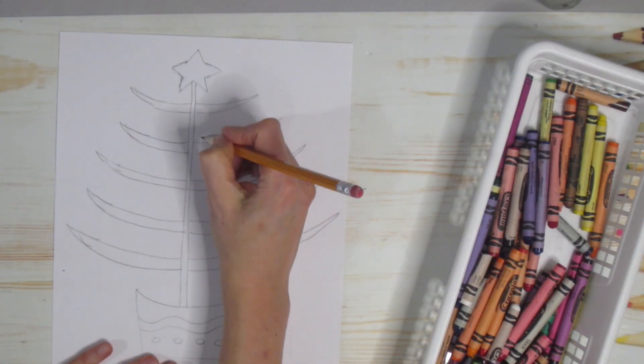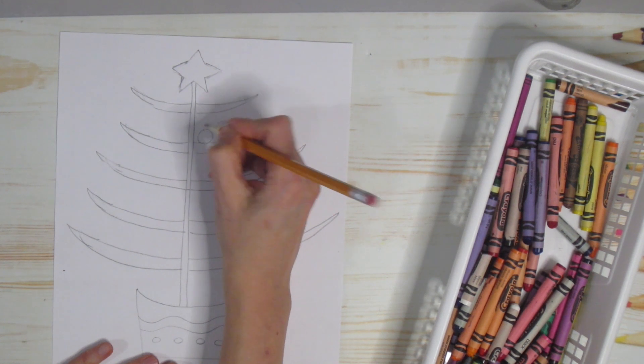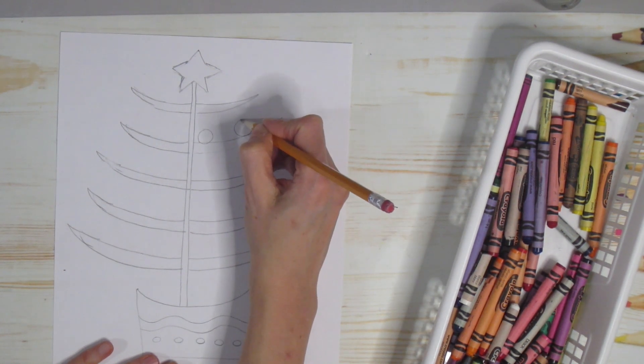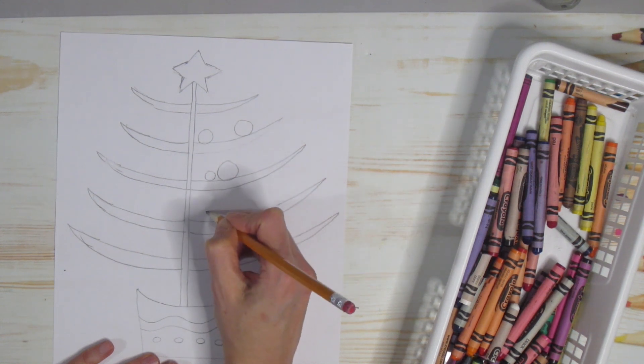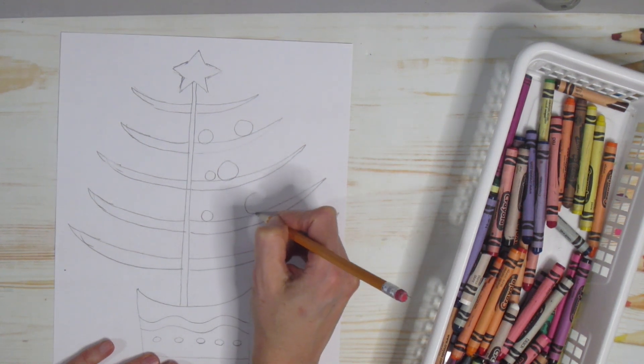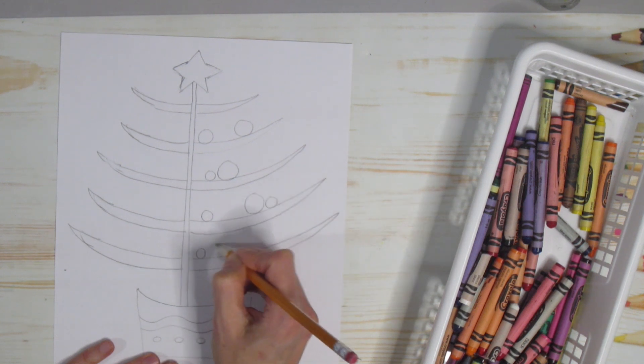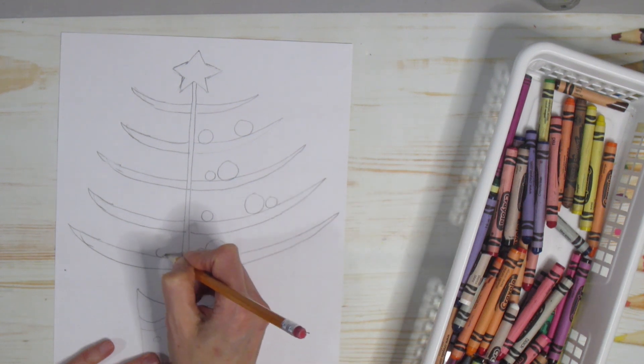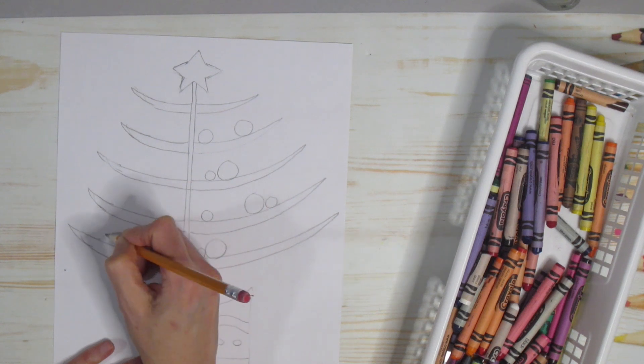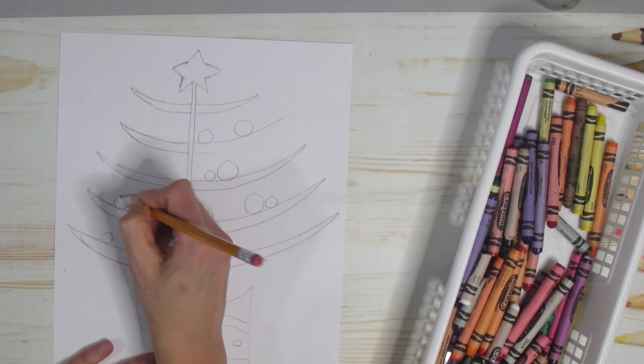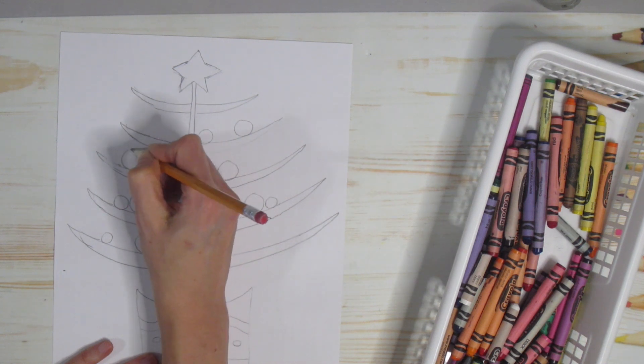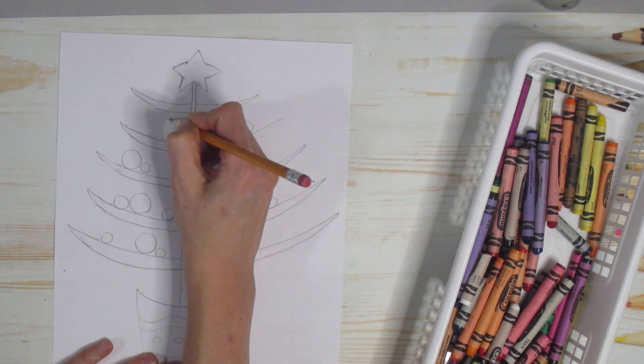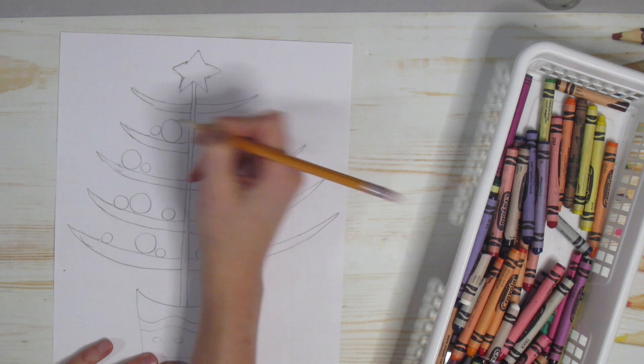Then I'm just going to use circles. Decorate randomly, some smaller, some larger, beside each other, far away. Just randomly placing them. Go ahead and put your decorations just sitting on top here any way that you would like, as many as you want, as few as you want.